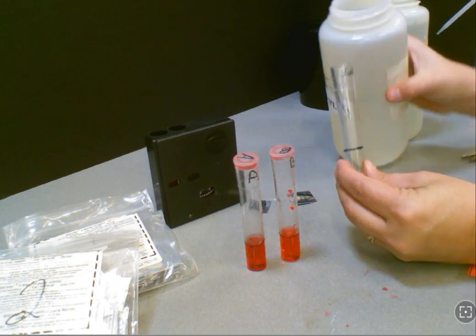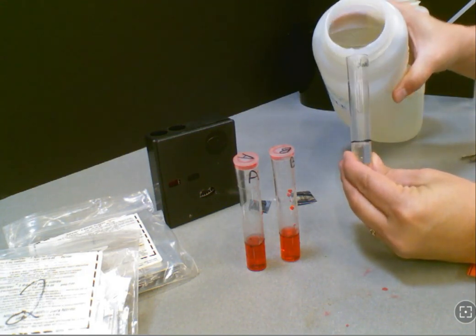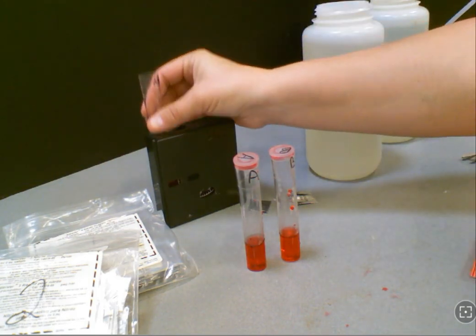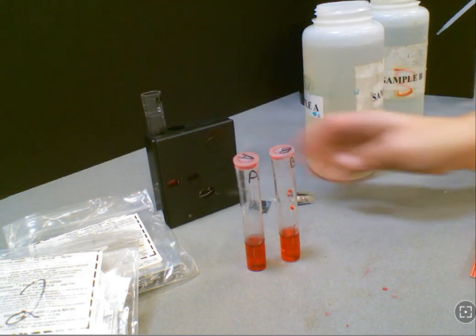While you're waiting you're going to get some untreated sample water and set it into your extra sample tube up to the black line or the bottom of the tube, and set it into the hole on the outer left side of the comparator.